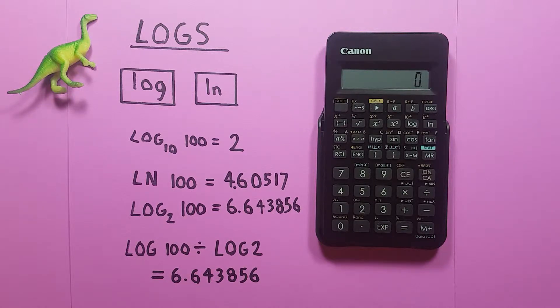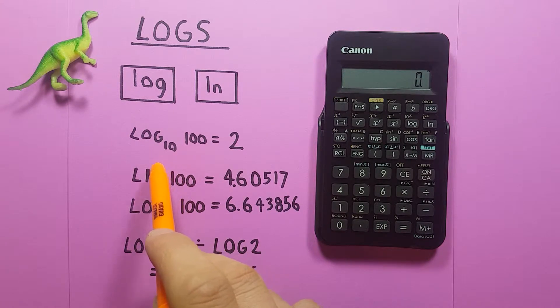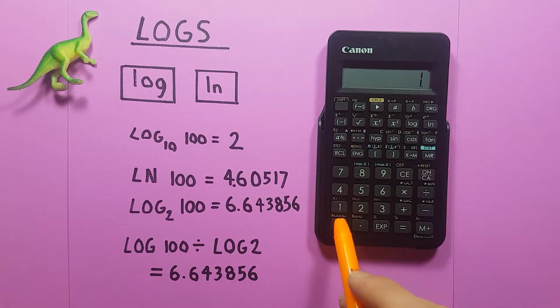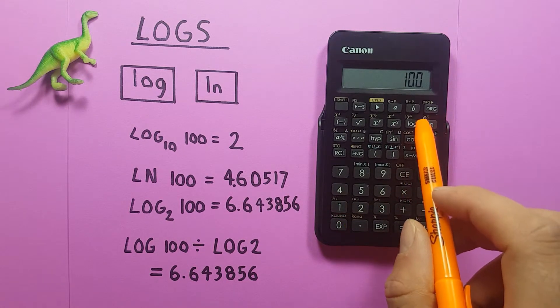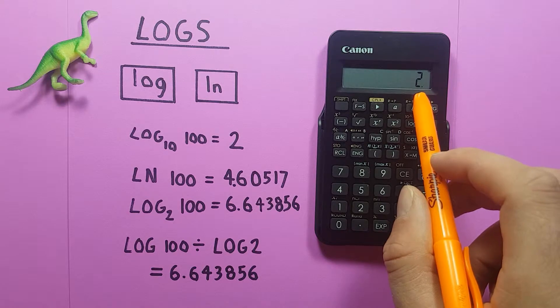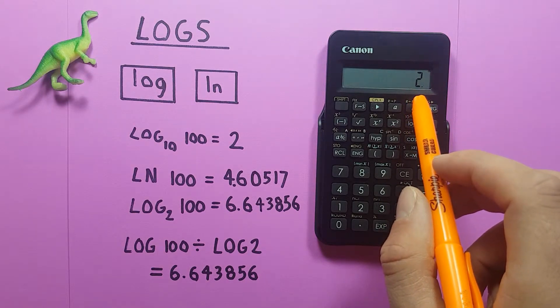To get started, the log base in this calculator is log base 10. So if we wanted to find log base 10 of 100, all we would have to do is enter 100 on the screen and then press log. And it gives us the answer of log base 10 of 100 which is 2.